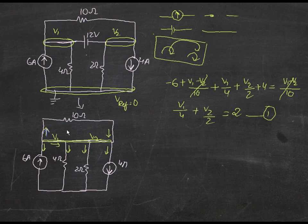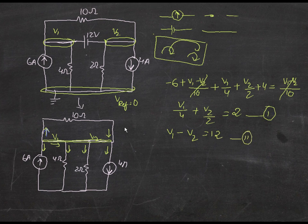Since there are two unknown variables you definitely need a second equation. The second equation comes from the voltage source you removed: the potential difference between the two nodes is 12 volts. This node is v1 and the other is v2, so the second equation is: v1 minus v2 equals 12 volts. You always get one equation from the combined supernode KCL, and another from the potential difference of the removed voltage source.